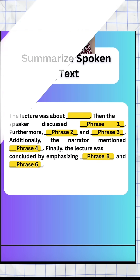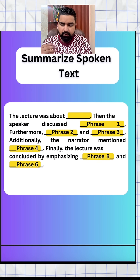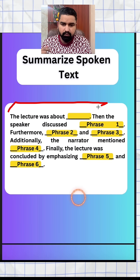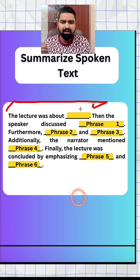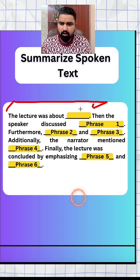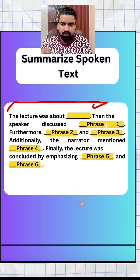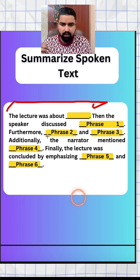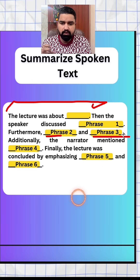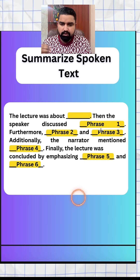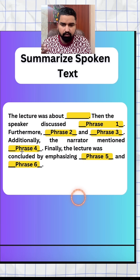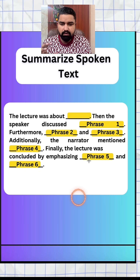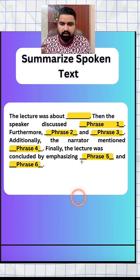Now let's move on to the template. There are five to six lines. The first line is 'The lecture was about' — here you can insert one main keyword or a small phrase. Then 'The speaker discussed phrase number one. Furthermore,' then you can insert two more phrases — phrase two and phrase three. 'Additionally, the narrator mentioned one more phrase. Finally, the lecture was concluded by emphasizing phrase number five and phrase number six.'